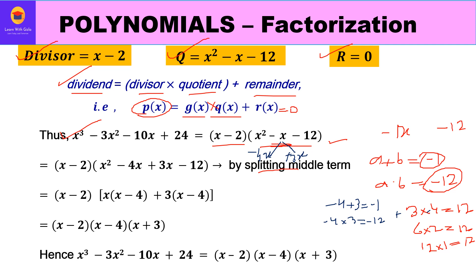So x² - x - 12 is written as x² - 4x + 3x - 12. Grouping: x(x - 4) + 3(x - 4). Taking (x - 4) common, we get (x - 4)(x + 3). Therefore the full factorization is (x - 2)(x - 4)(x + 3).